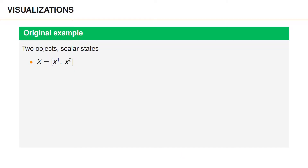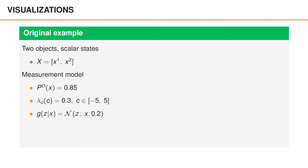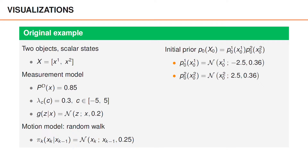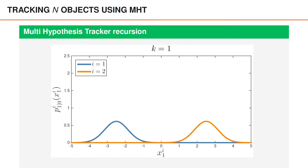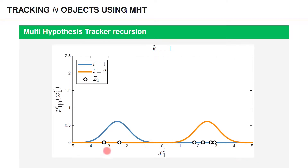Let's begin with the same example as in GNN and JPDA. We have two objects with scalar states, the same linear Gaussian measurement model with uniform clutter, and a random walk motion model. We have the same initial prior with means at negative 2.5 and 2.5. At time step one there are six measurements — two close to where object one is likely to be located, and four close to where object two is likely to be. We can expect two significant hypotheses for object one and four significant hypotheses for object two.